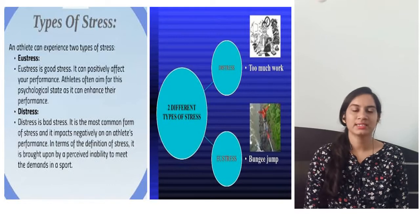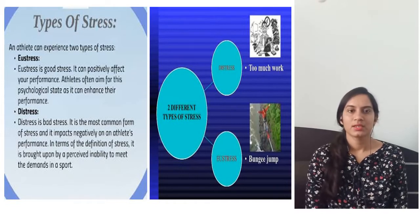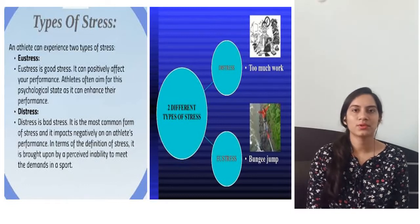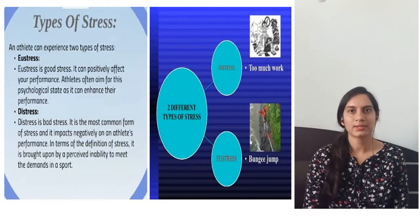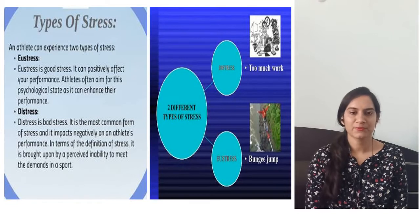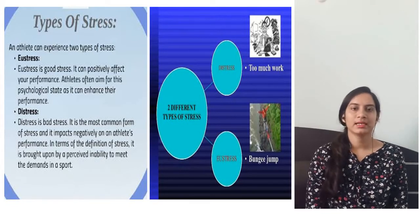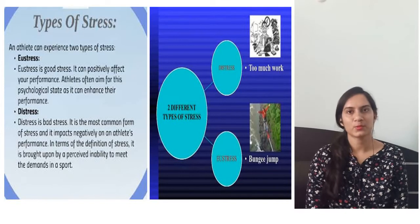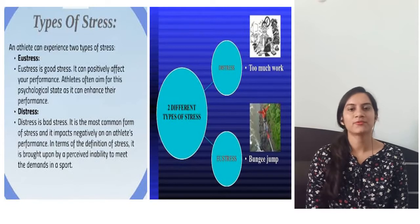Eustress is a good stress. It can positively affect your performance, and athletes often aim for this psychological state as it can enhance their performance. Distress is a bad stress and is the most common form. When good stress is present in our life, we do not consider it stress. Distress shows a negative impact on an athlete's performance — it deteriorates the performance. In terms of definition, distress in sports is the inability of an individual to meet the demands required in a sports condition.